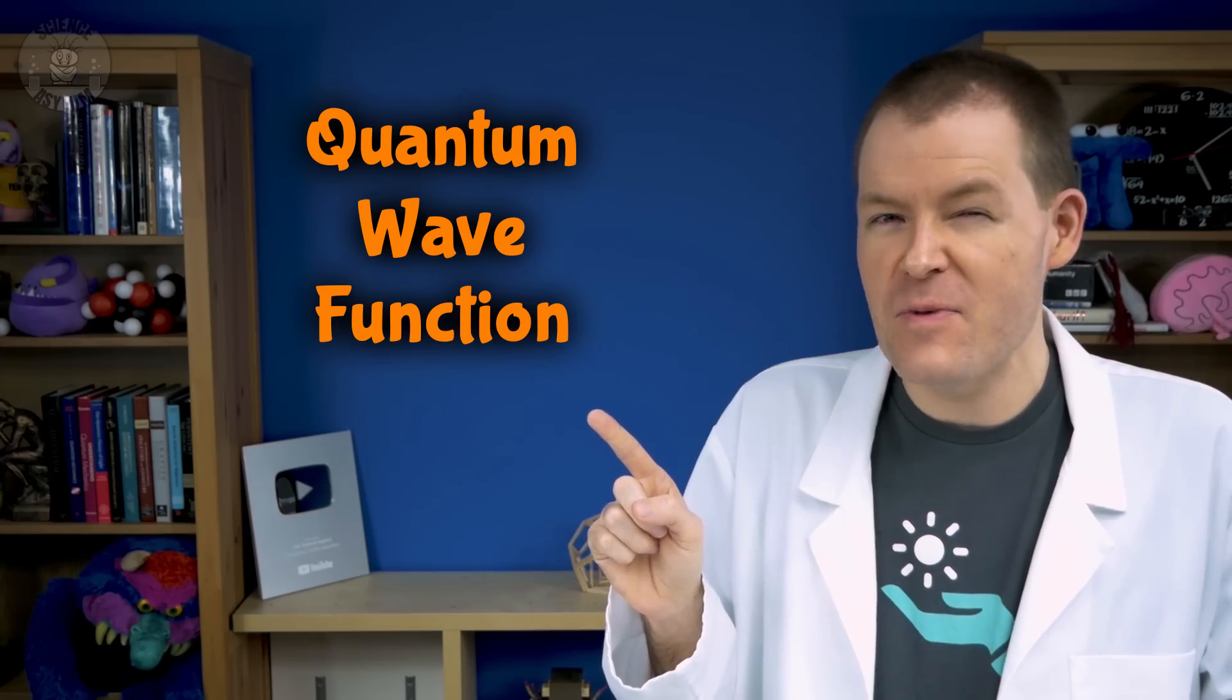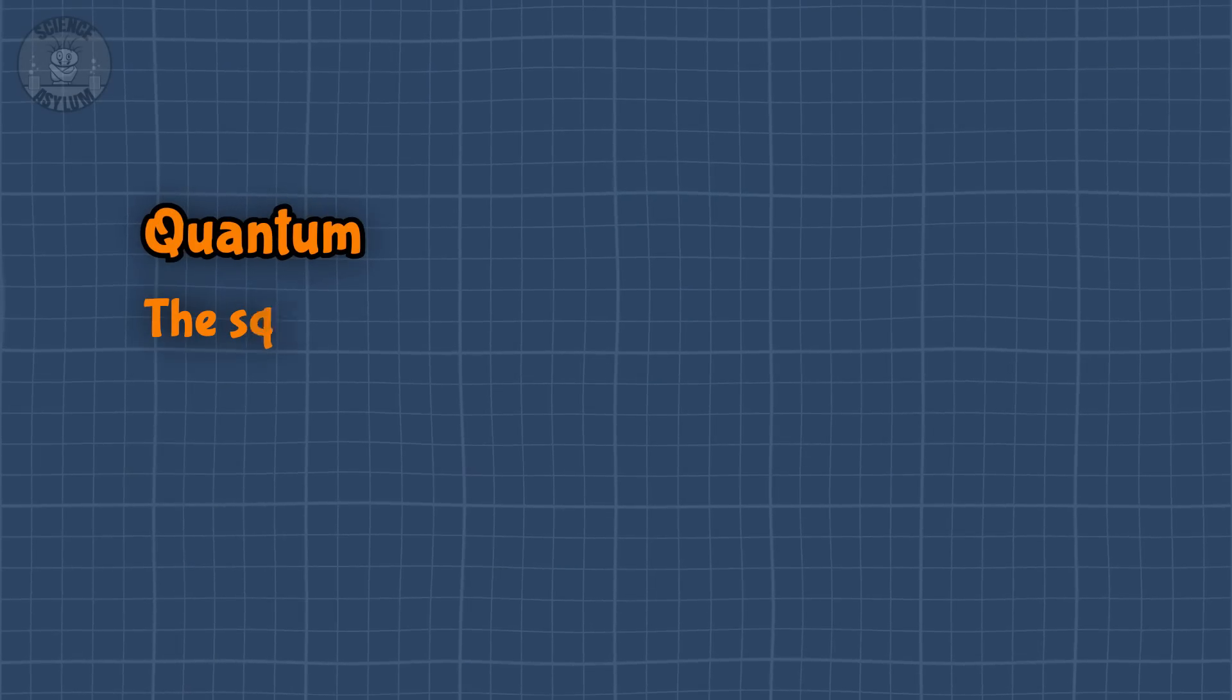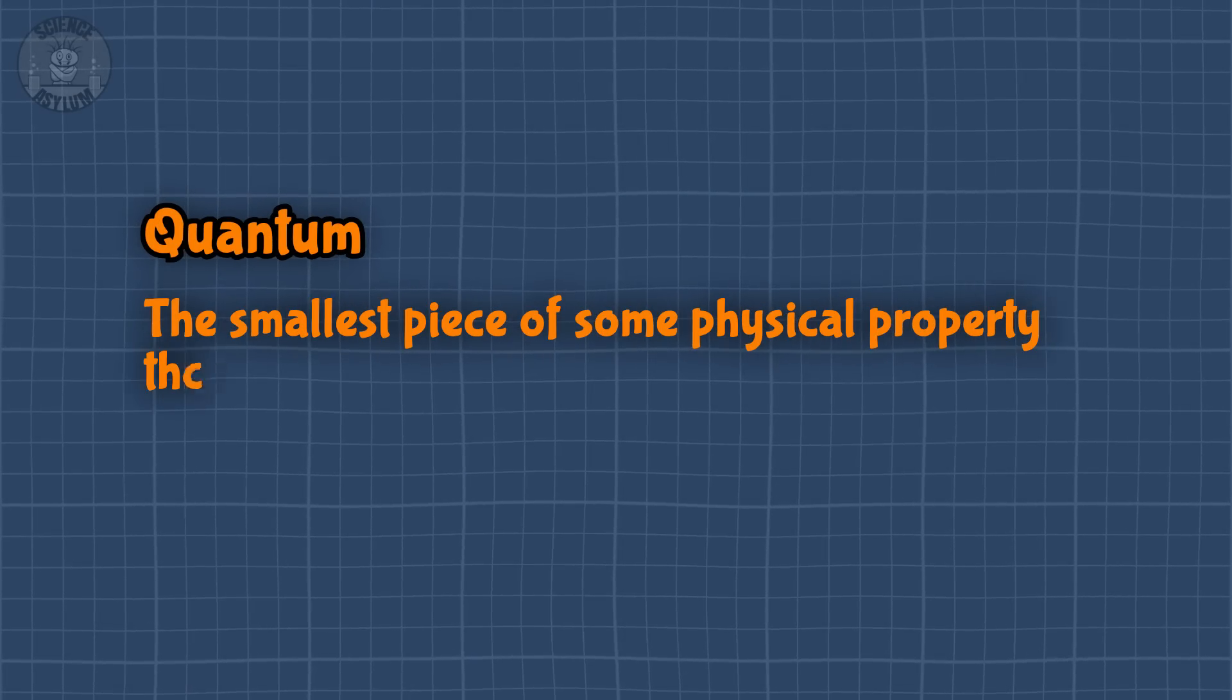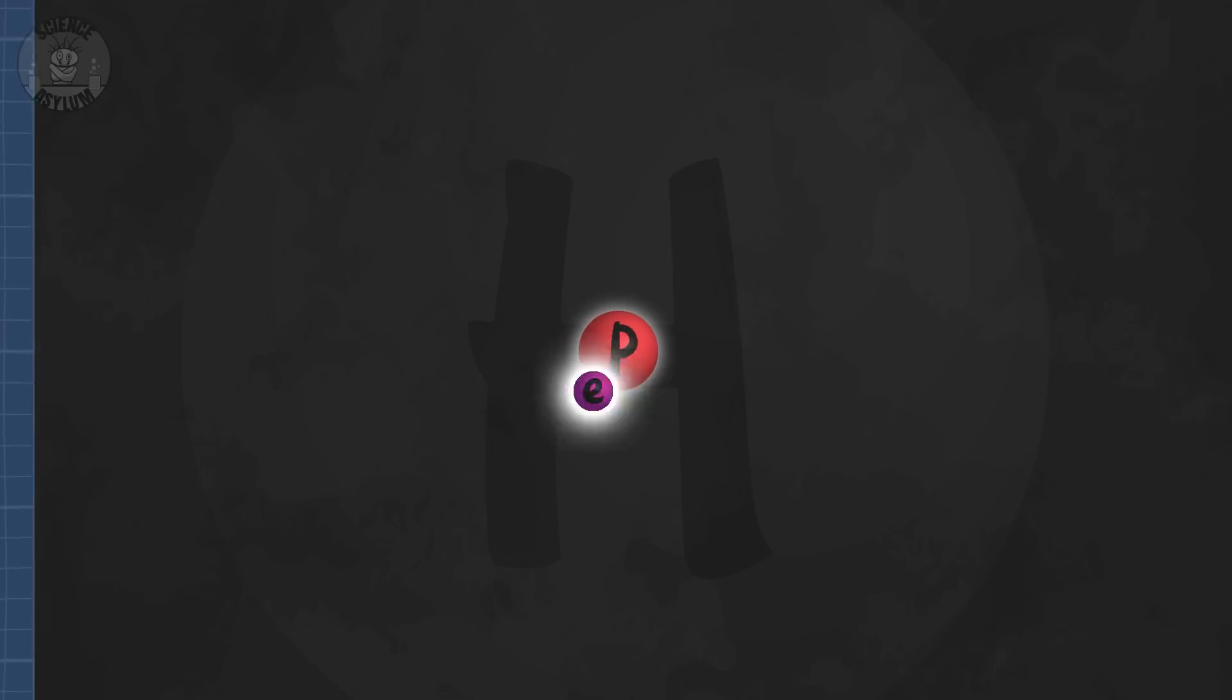We better know what those words mean separately before we go mixing them together. A quantum is just the smallest piece of some physical property that could be used during a particle interaction. Like when an electron in an atom drops down energy levels, a photon is usually emitted. That photon is a quantum of light energy. When we realized stuff like this could happen, we had to invent a new type of mechanics to describe it. Naturally, we called it quantum mechanics.